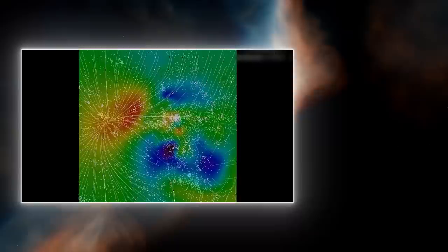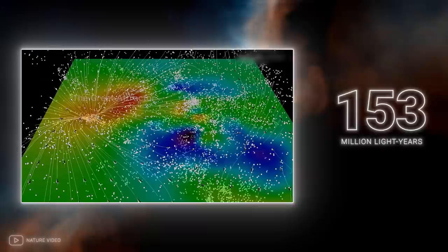The Local Group, along with many other groups and clusters of galaxies, is moving towards a mysterious super-density in a super-cluster of galaxies known as the Great Attractor. The Great Attractor is a region of space about 150 million light-years away, and its gravitational attraction is so strong that it influences the motion of galaxies within hundreds of millions of light-years.